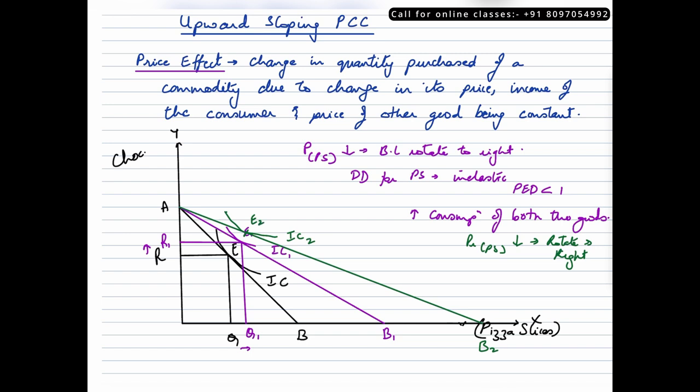And let us see where the equilibrium is. Let us say this is IC2, this point of equilibrium is E2. We are not able to see E1 so let me just write it here. At point E2 the consumer is consuming Q2 of pizza slices and R2 of chocolates.